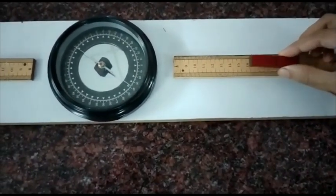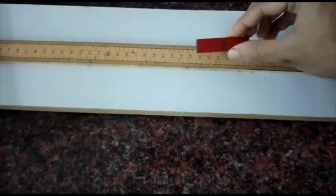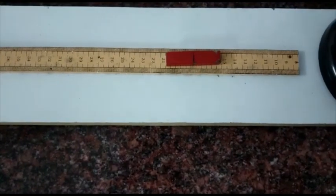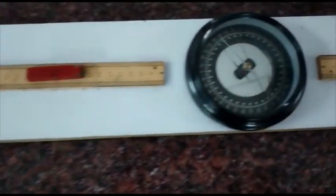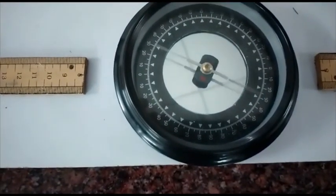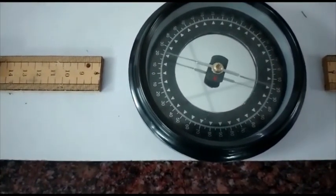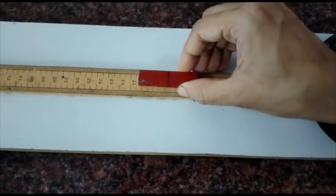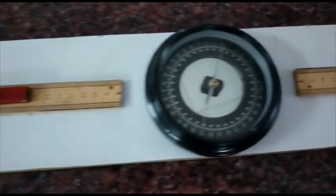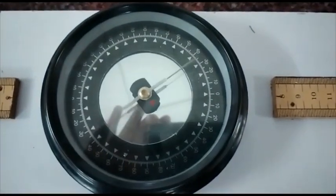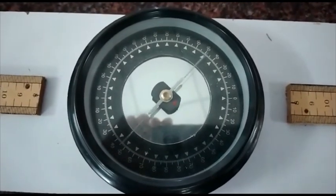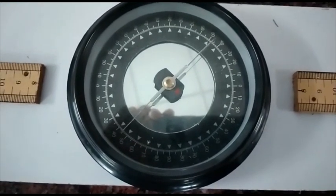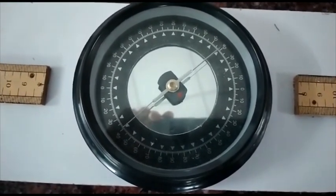Now we are placing this bar magnet into the next arm again at the same distance and note down the deflection in compass box. This we can take as theta 5 and theta 6. Again reversing the magnet at the same distance, noting the deflection in the compass box, we will get theta 7 and theta 8.